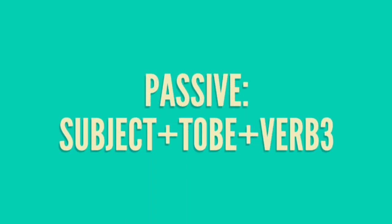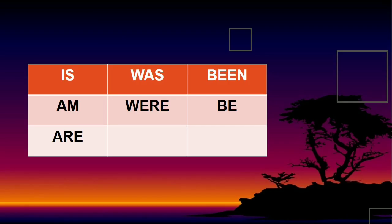To be consists of several types. There are several to be forms we need to understand: is, am, are, was, were, been, be. I do believe you are already familiar with all of them.